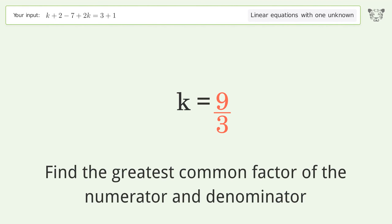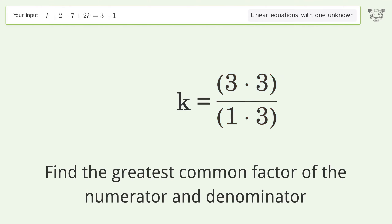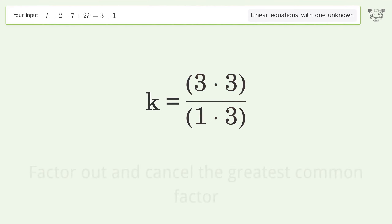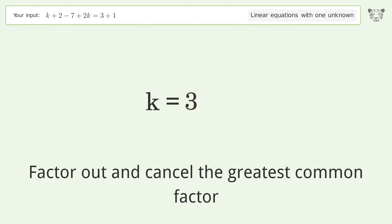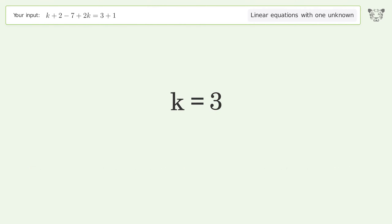Find the greatest common factor of the numerator and denominator, then factor out and cancel the greatest common factor. The final result is k equals three.